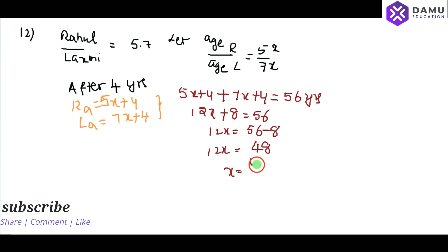x will be equal to 48 by 12. 12 ones are 12, 4s. Then x will be equal to 4.